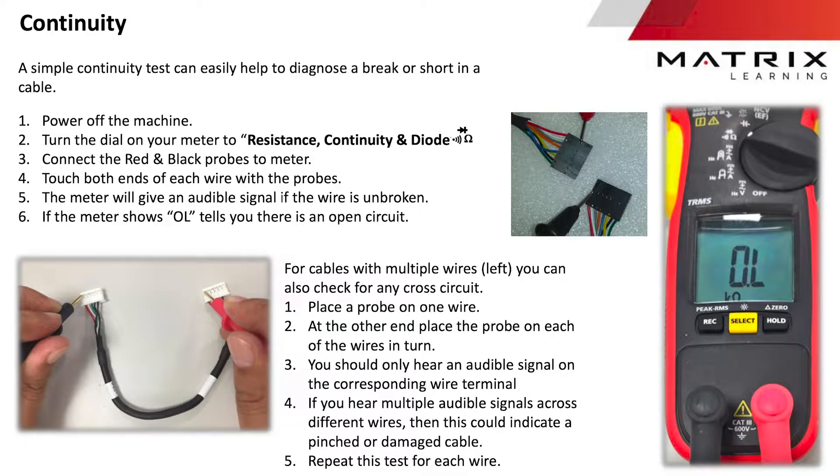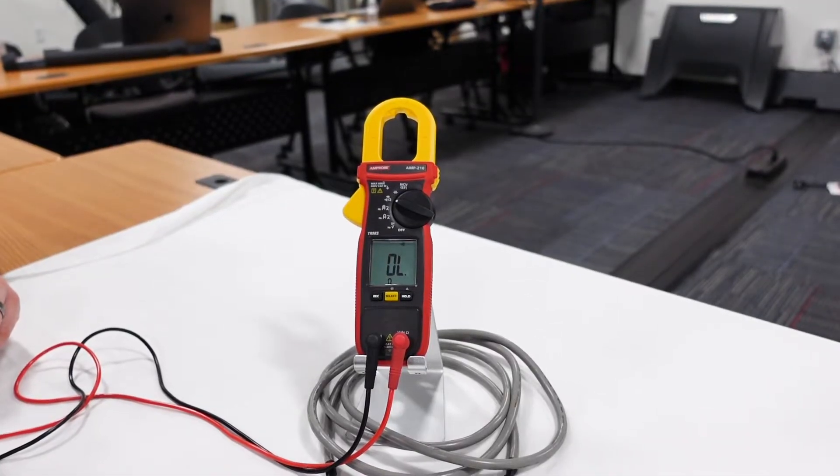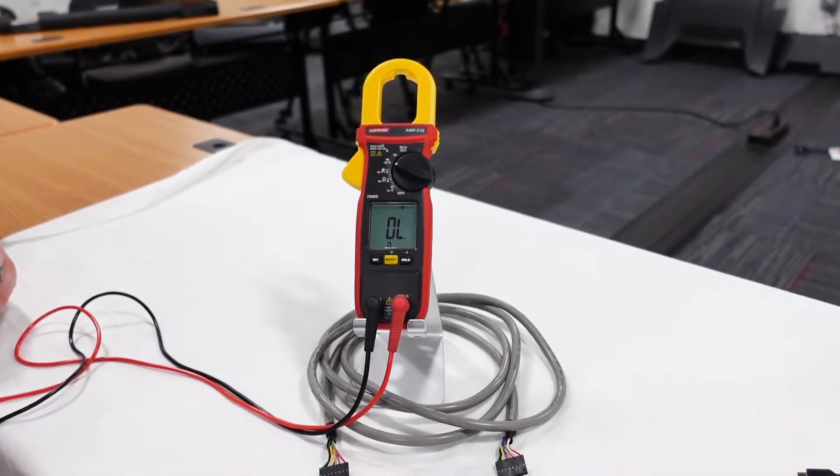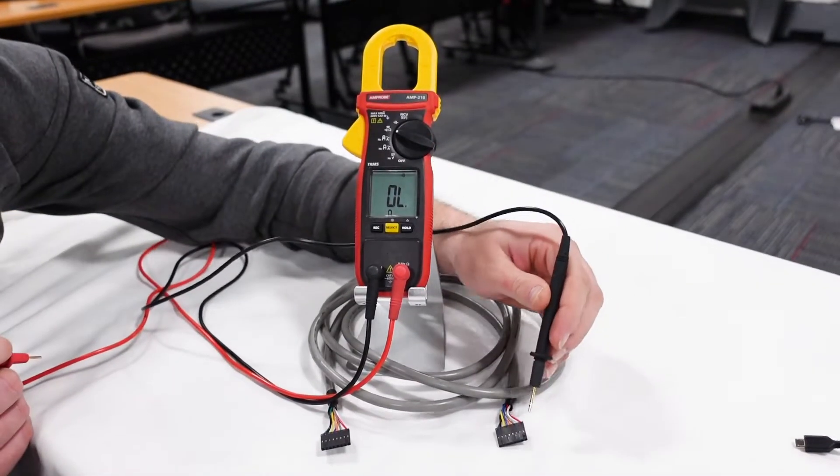A simple continuity test can easily help to diagnose a break or short in a cable. Touch both ends of each wire with the probes. The meter will give an audible signal if the wire is unbroken.